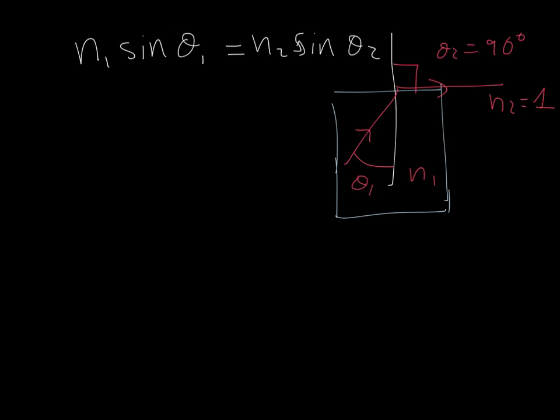Okay, N1 I don't know, so I'm just going to leave it. N1 sine of theta1, which we said is the critical angle, equals N2, which is just air, so it's just 1, times the sine of 90. Now, if you know anything about trigonometry, you will know that sine of 90 is 1. If you don't believe me, just put it in your calculator. Therefore, we get that N1 sine of the critical angle is just 1. And from here, I can just deduce that the sine of the critical angle equals 1 over N1.